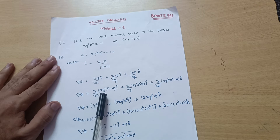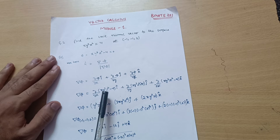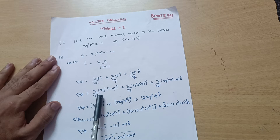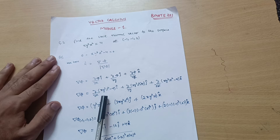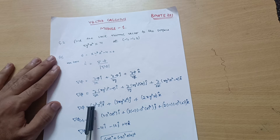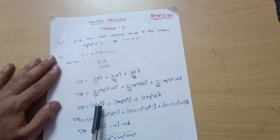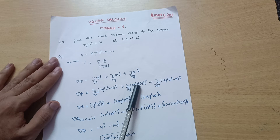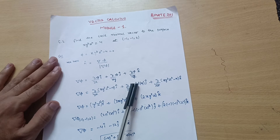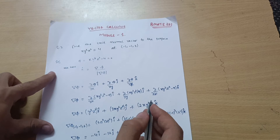Differentiating with respect to x: y and z are treated as constants, so the differentiation of x is 1, giving y³z² î. For the y-component, we differentiate with respect to y, so x and z are constant. We need the derivative of y³ with respect to y.